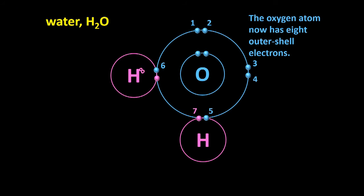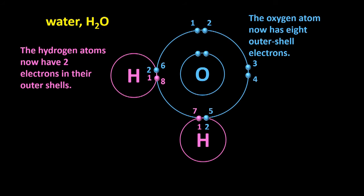The oxygen atom now has eight outer shell electrons - the six blue electrons that it had, plus the two pink ones that it managed to attract. This is the maximum number that it can hold. The hydrogen atoms now have two electrons in their outer shells - the pink ones that they started with and the blue ones that they've attracted. And so their shells are full as well. This arrangement is stable.